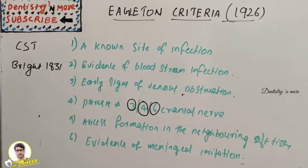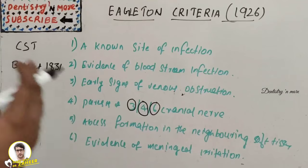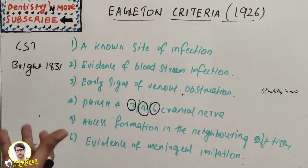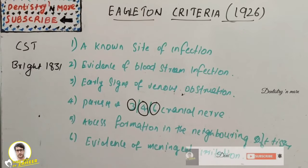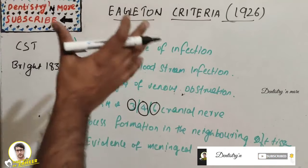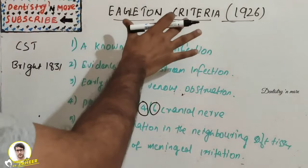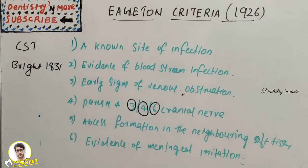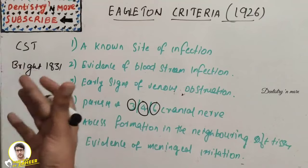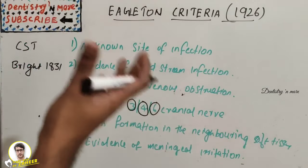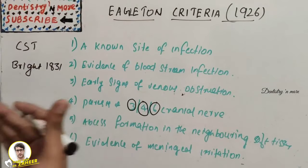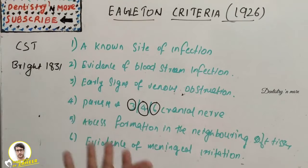CST is a very rare disease, but the mortality rate remains very high even after the breakthrough of antibiotics and all the advanced imaging techniques. If a person is not aware of this criteria, it can worsen the patient's situation. However, if we can diagnose CST as early as possible, we can start antibiotic intervention and reduce the mortality and save the patient.